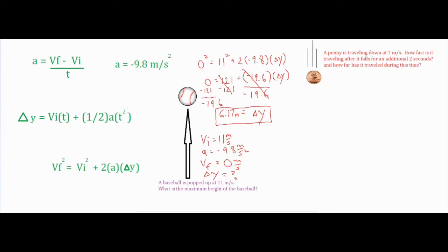Now for our second problem, it says a penny is traveling down at seven meters per second. How fast is it traveling after it falls for an additional two seconds, and then asks how far has it traveled during this time?